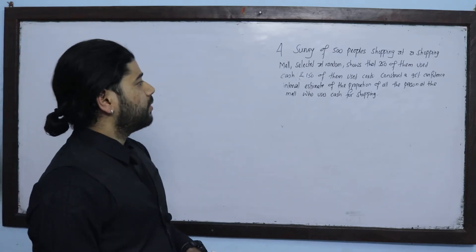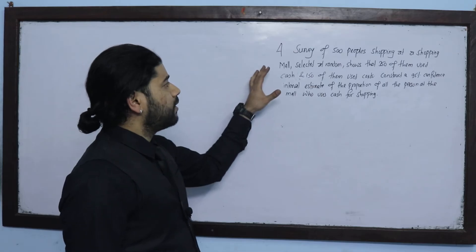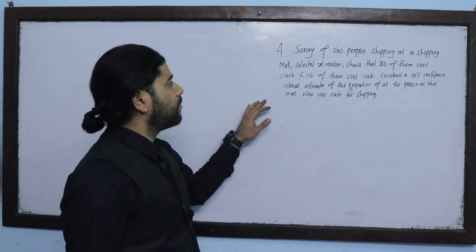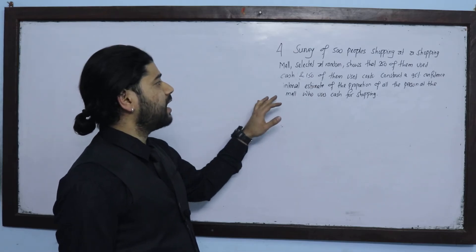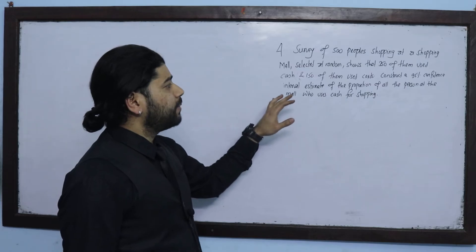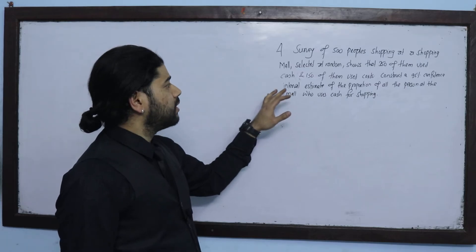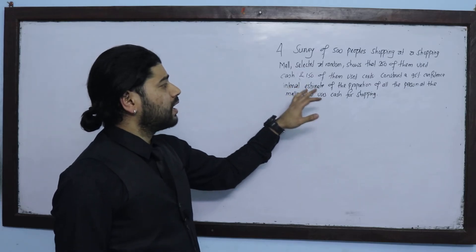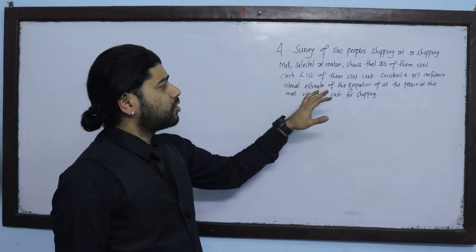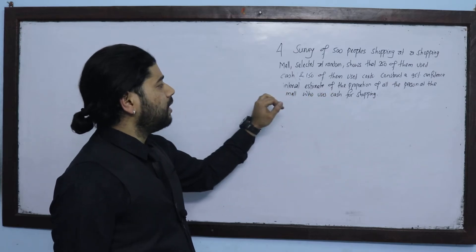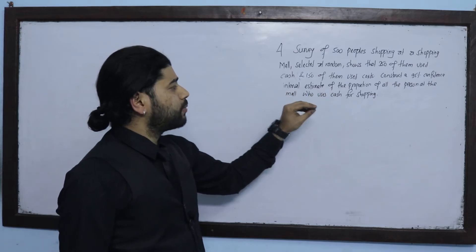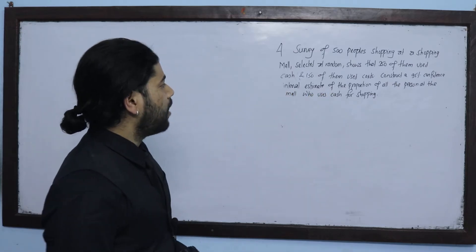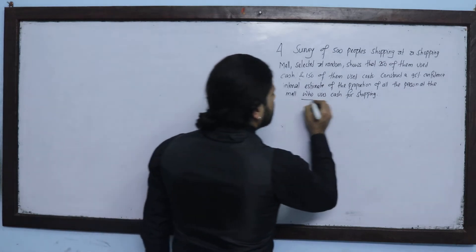A survey of 500 people shopping at a shopping mall, selected at random, shows that 350 of them used cash and 150 of them used card. Construct a 95% confidence interval to estimate the proportion of all persons at the mall who use cash for shopping.